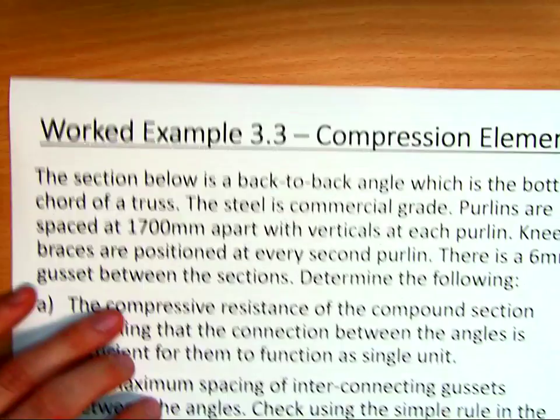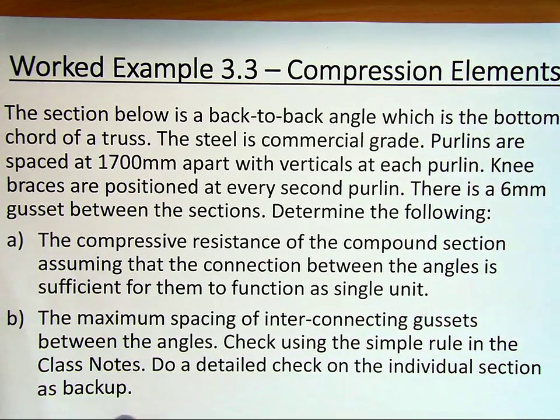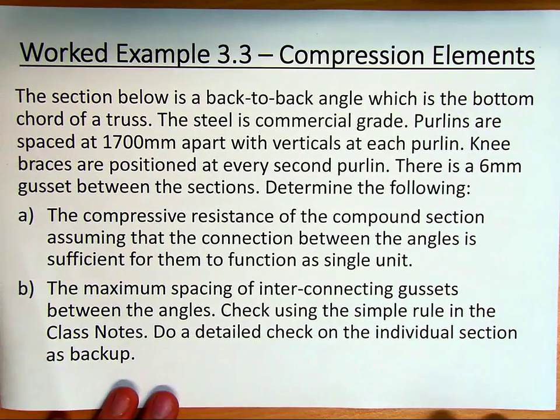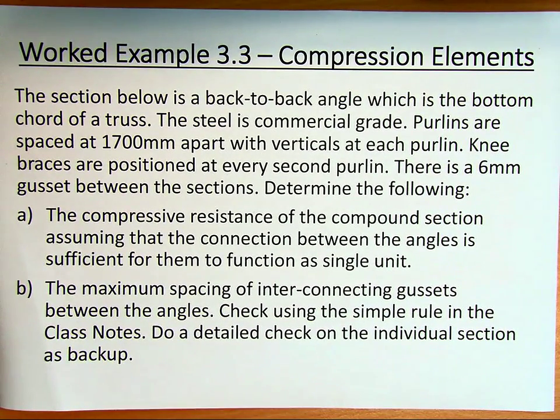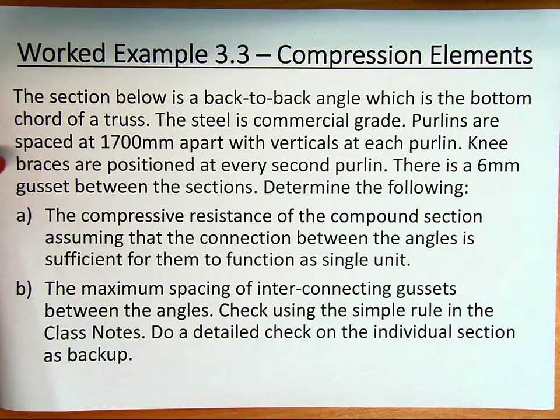Just a reminder of what we're going through. Here we have the section below is a back-to-back angle, which is the bottom chord of a truss. It's commercial grade steel, purlins are spaced at 1700mm apart with verticals at each purlin, knee braces are at every second purlin. There's a 6mm gusset plate. We've already completed Part A, so this is Part B: the maximum spacing of interconnecting gussets between the angles.